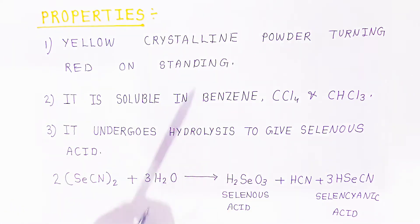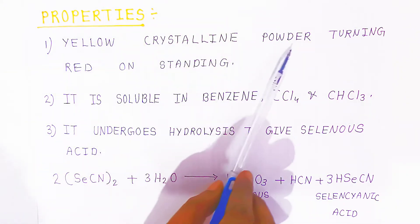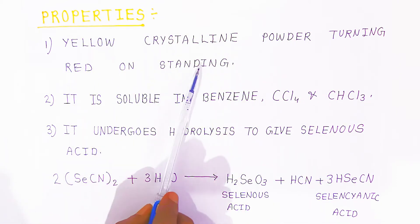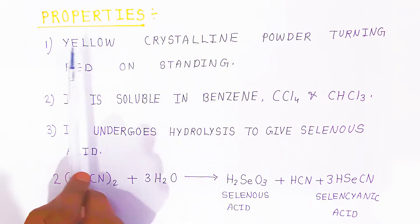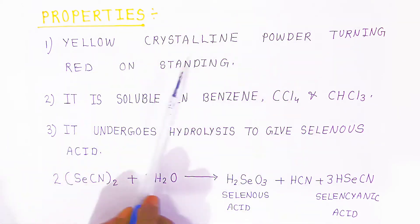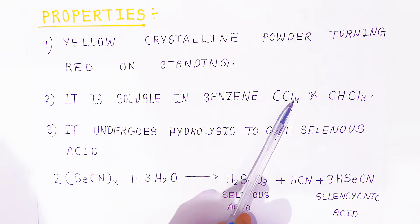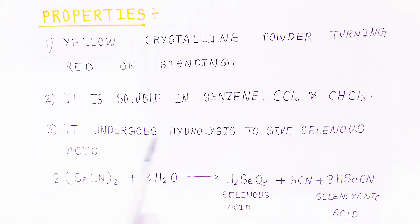Now we are going to see the properties. Once you prepare it, how does it look? It is yellow crystalline powder turning red on standing. It is soluble in benzene, carbon tetrachloride and chloroform. It undergoes hydrolysis.